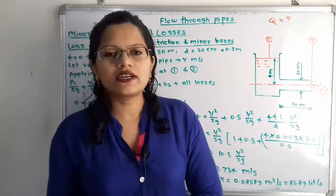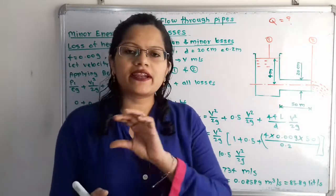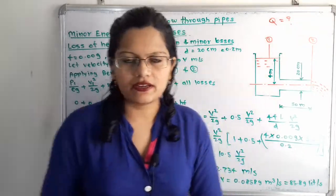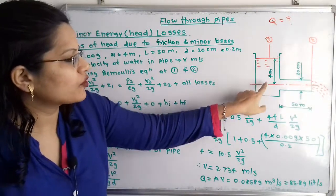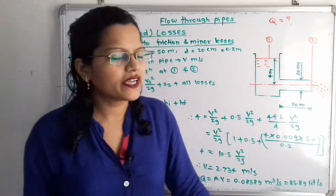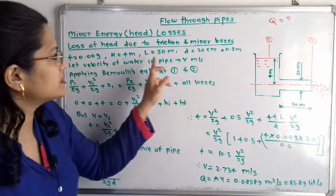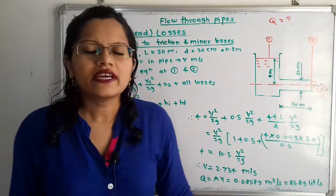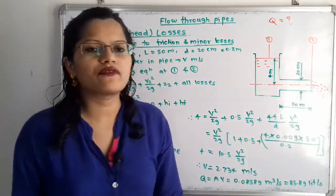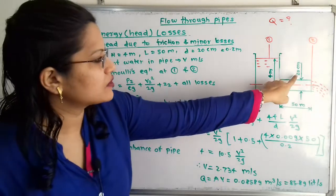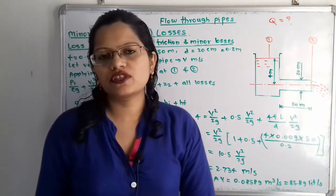Let us first understand the diagram as per the given data. The pipe is connected to a water tank and the surface of water is at a height of 4 m from the center of the pipe, so capital H = 4 m. The length of pipe is capital L = 50 m, and the diameter of the pipe, small d = 20 cm = 0.2 m.